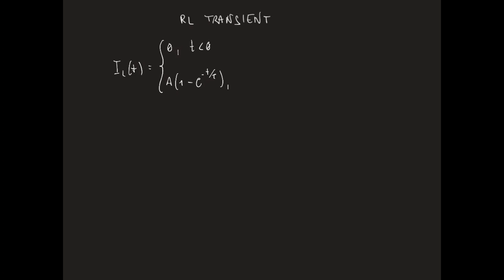This is what we already know as a rising exponential, IL(t) = A times e^(-t/τ) for T larger than or equal to zero, where of course τ is L over R. In a more compact form, IL of t can be written as A times the step of t times (1 minus e^(-t/τ)).